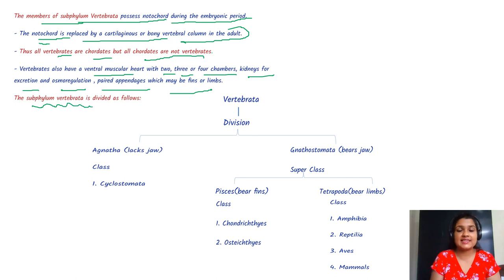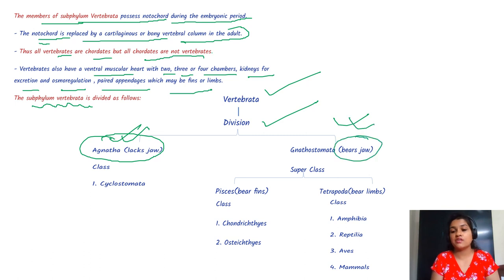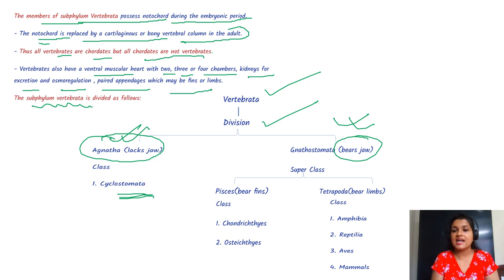Vertebrata is divided into Agnatha, which lacks jaws, and Gnathostomata, which has jaws. Under Agnatha there is Cyclostomata. Under Gnathostomata there is superclass Pisces bearing fins, and Tetrapoda bearing limbs. Under Tetrapoda are Amphibia, Reptilia, Aves, and Mammalia.